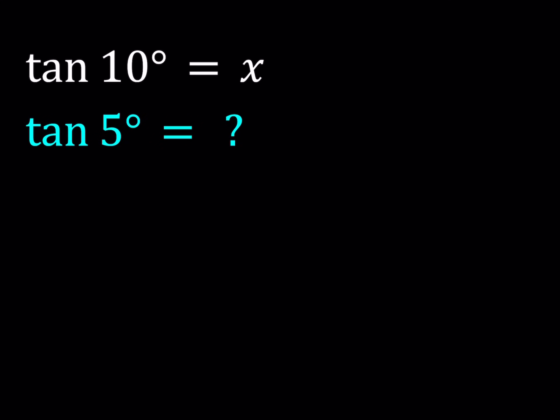Hello everyone. In this video we're going to be evaluating a trigonometric expression in terms of another one. We are given that tangent 10 degrees is equal to x, and we're supposed to find tangent 5 degrees in terms of x.